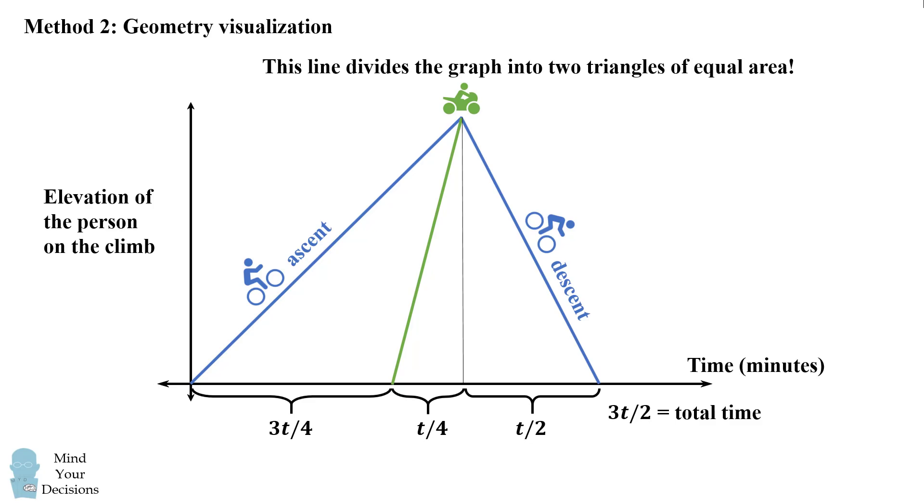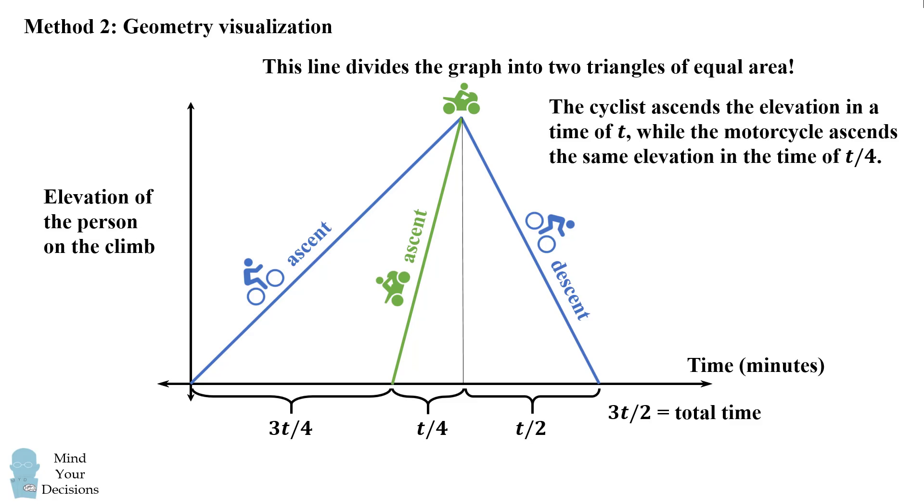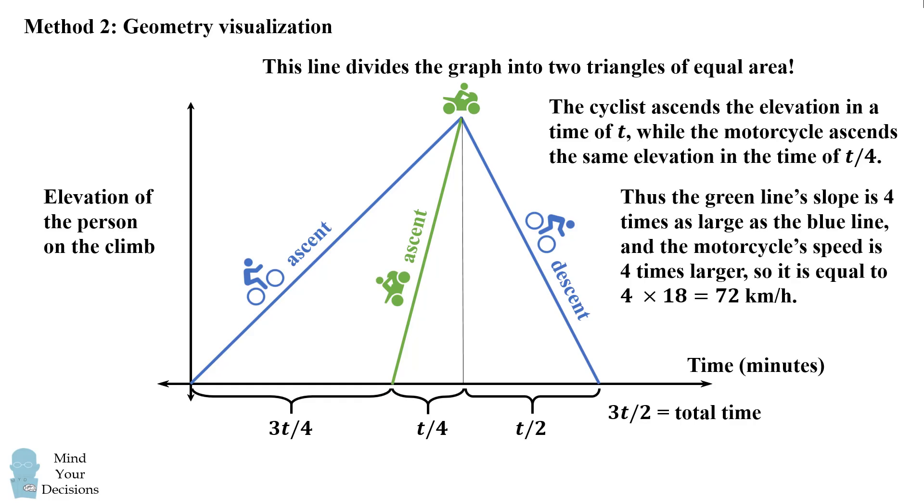Now how is this useful to us? Well notice that the motorcycle ascends the climb in t over 4 minutes, while the cyclist does the same ascent in a time of t. So we can use these times to deduce that the green line has a slope that's 4 times as large as the blue line. Therefore the motorcycle speed is 4 times larger than the cyclist speed on the ascent, so it is equal to 4 times 18, which equals 72 kilometers per hour.